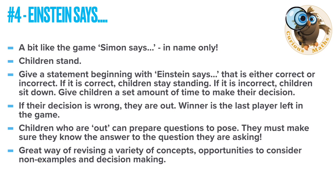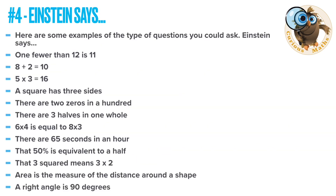Game four is Einstein Says. It's similar to Simon Says in name only but it's a great maths game. Children stand up and you give them a statement beginning with 'Einstein Says' — that statement will be correct or incorrect. If it's correct, children need to stay standing; if it's incorrect, they need to sit down. You give them a set amount of time to make their decision, because if their decision is wrong they are out. The winner is the last player left. Children who are out can get involved by preparing questions to pose. It's a really good way of revising concepts and getting children to contribute. Examples of the types of questions are on the screen — some correct, some incorrect. It's a really good way to get discussion going, children agreeing and disagreeing, and you can unpick any statements in more detail.